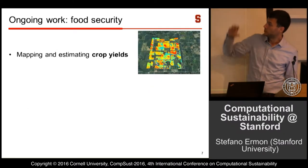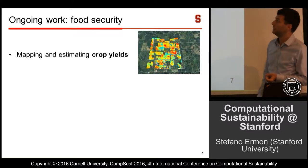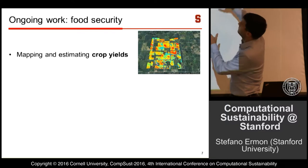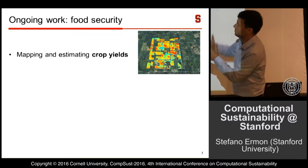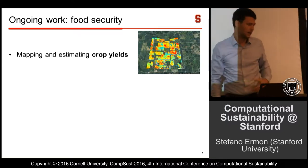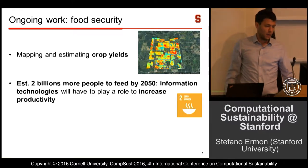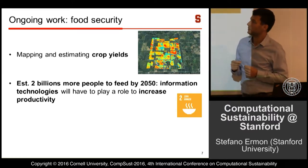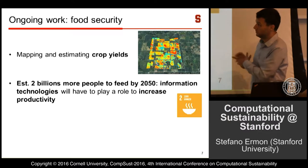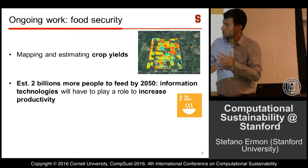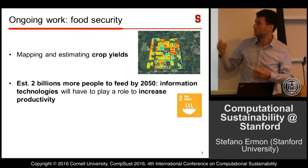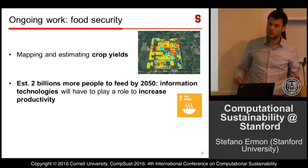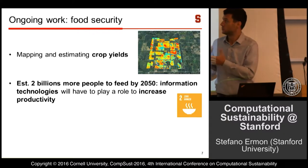More recently, we've also been looking at estimating crop yields using remote sensing data — here in the Midwest — estimating crop yields at the field level using cheaply collected, publicly available data. Agriculture is an important component of developing-country economies, and we're hoping to extend these models there as well. Food security is a big problem: there will be two billion more people to feed by 2050, and information technology and AI techniques will have to play a role.